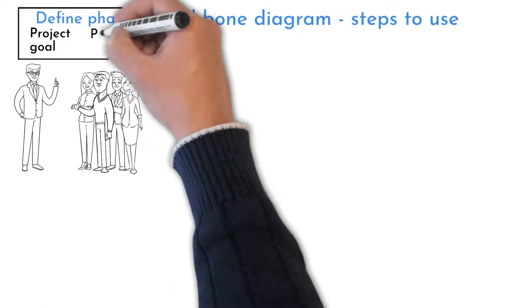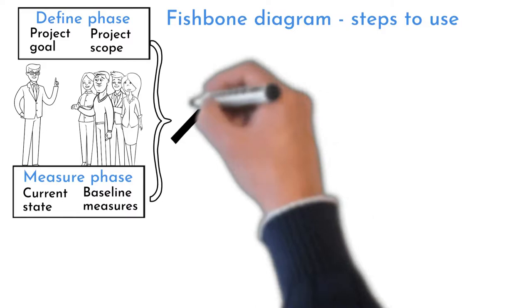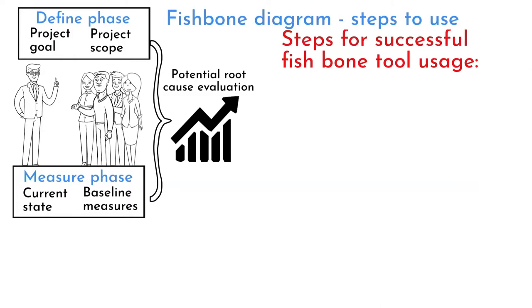Project team came to the point that they understood and are unified on the project goal and scope. Team have described current malfunctioning process in the measure project phase. Now they are at potential root cause evaluation.